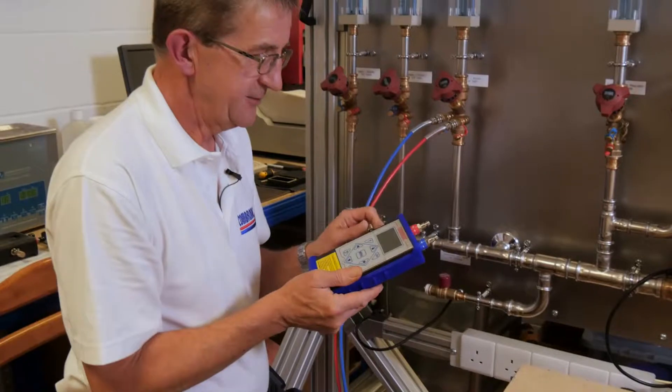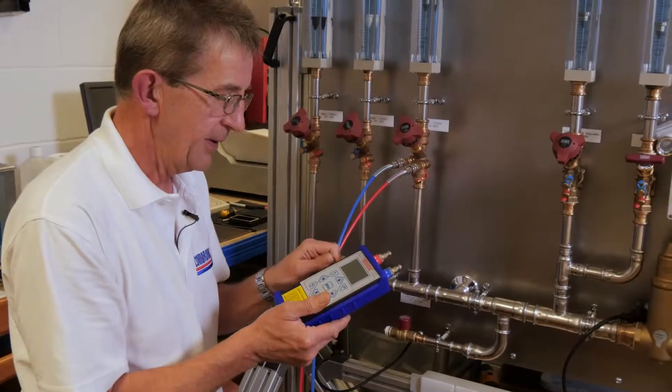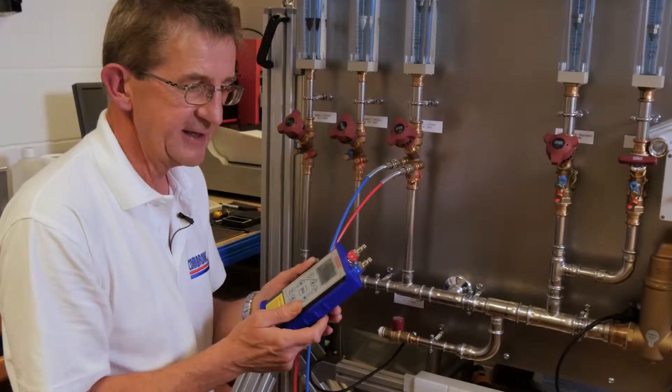Take the AC6 and first of all make sure that the equalizing valve on the side is fully open. And we're now going to attach the tubes to the AC6.